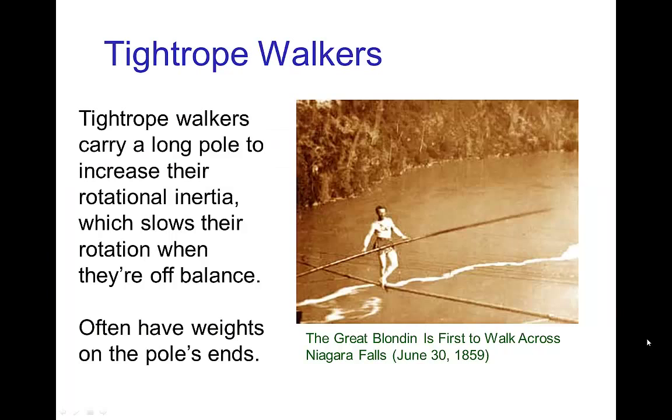And in fact, tightrope walkers take advantage of this effect where they carry a long pole. The long pole has a large rotational inertia and that slows their tipping motion. They can also put weights on the ends of the pole to slow them as well.